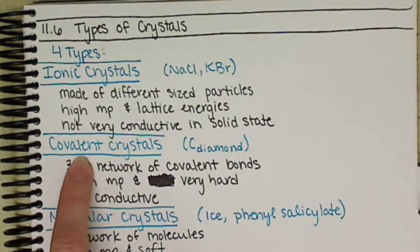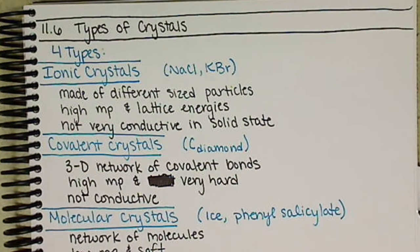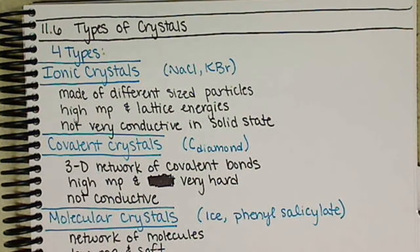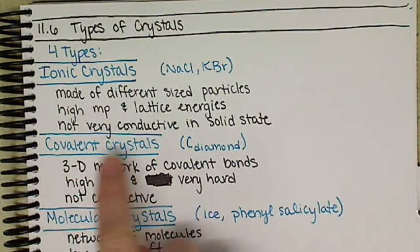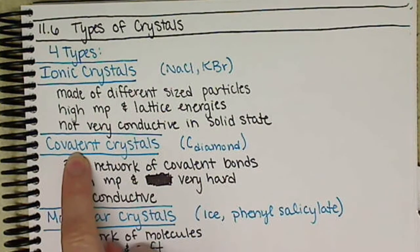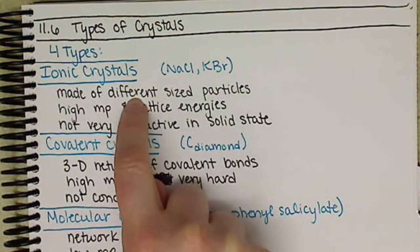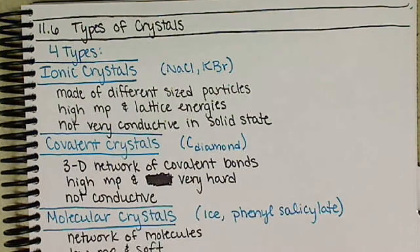For covalent crystals, these are 3D networks of covalent bonds. They have high melting points and are very hard, and they will also not be conductive. The main difference between these two is we have covalent bonds present in a covalent crystal, and then in our ionic crystals we have ions.